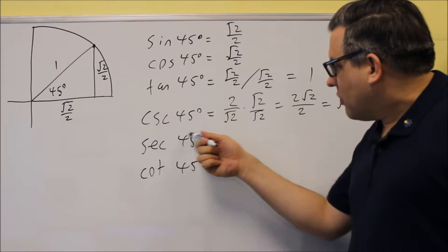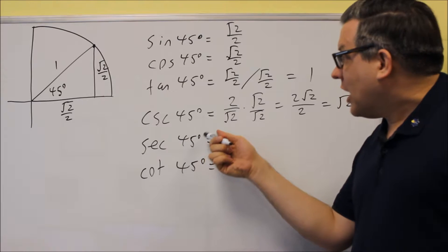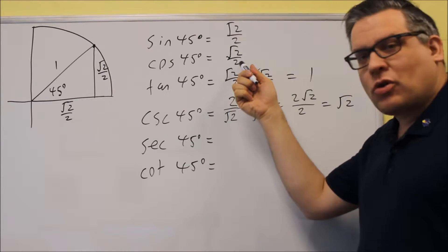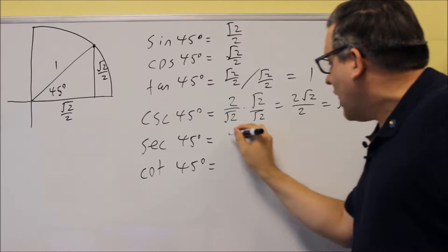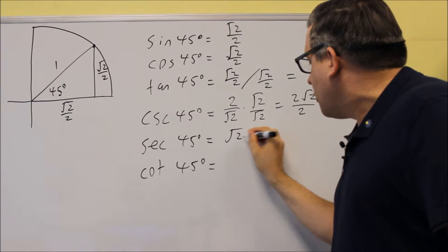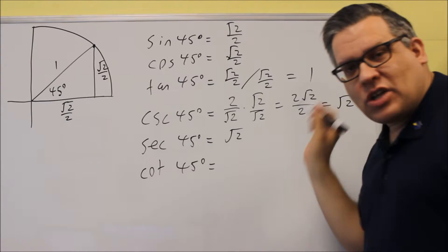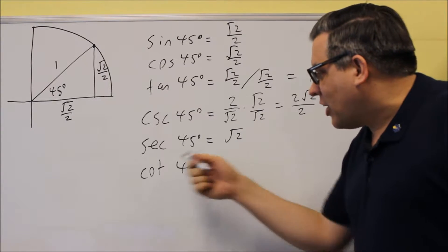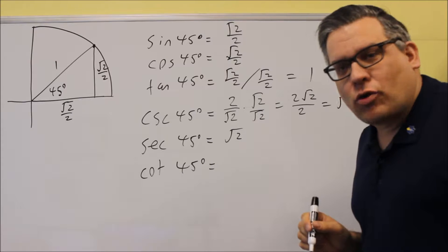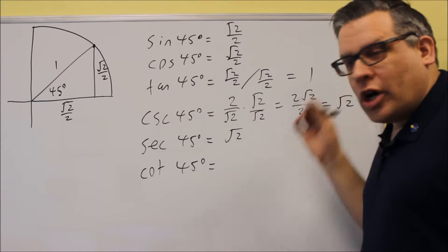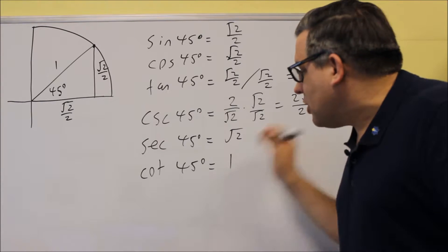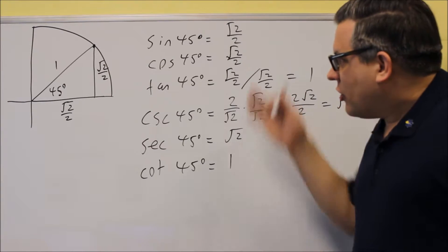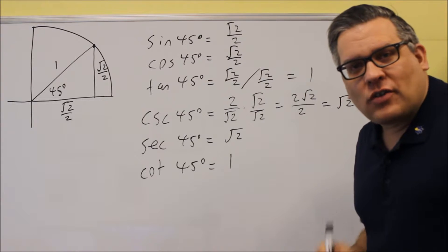Secant 45, if we take the reciprocal, gives the same exact answer — square root of 2 — after going through the same rationalization steps. And cotangent 45 is the reciprocal of 1, which is just 1. So those are your exact values for 45 degrees.